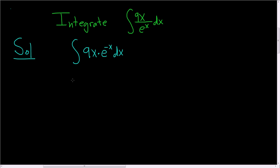Let's take the lazy way out. So when you're using tabular, what you want to do is look for a piece that after repeated differentiation is 0. In this case, that piece is 9x.